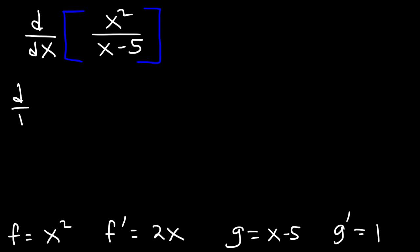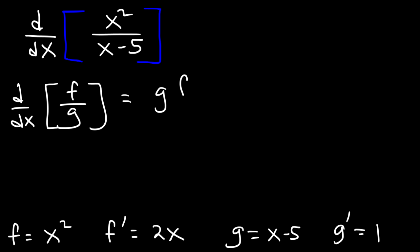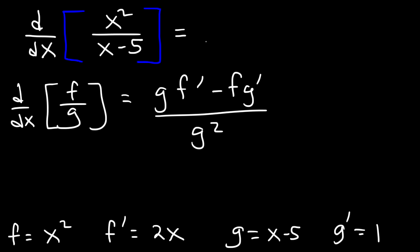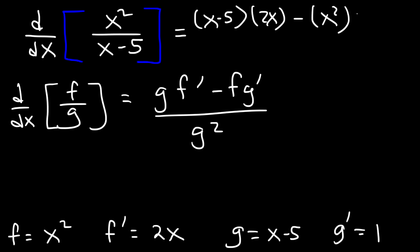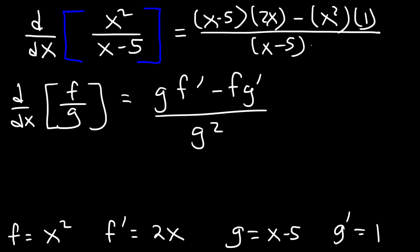Now I'm going to rewrite the formula: the derivative of f over g is g times f prime minus f times g prime, over g squared. Applying it: g is x minus 5, times f prime which is 2x, minus f which is x squared, times g prime which is 1, divided by g squared — x minus 5 squared.